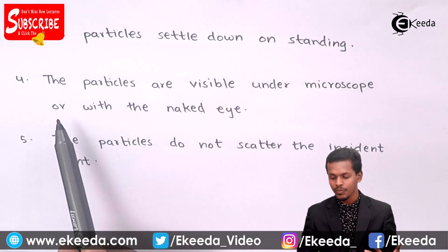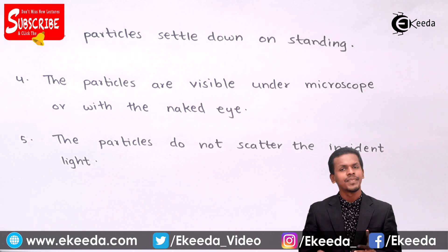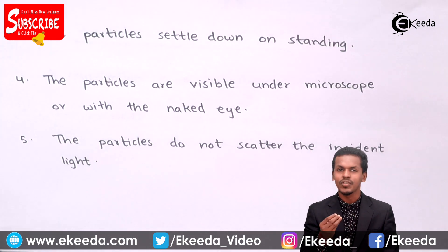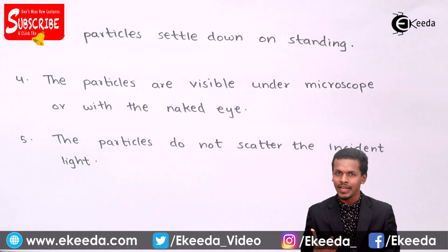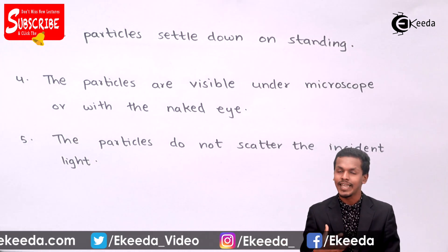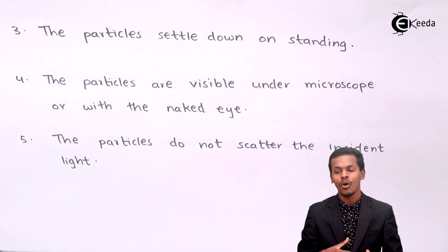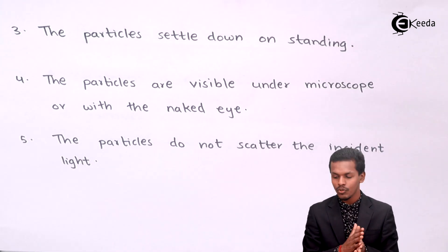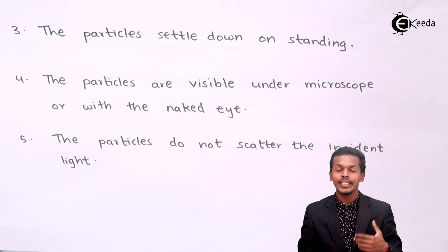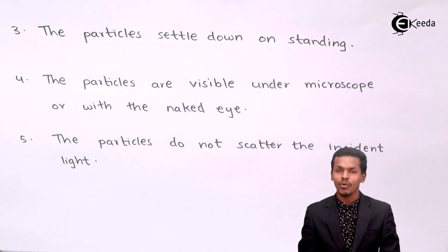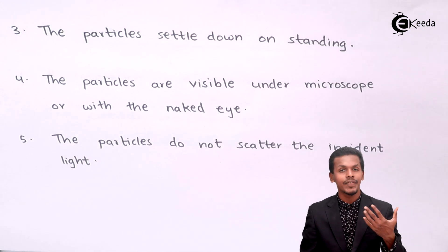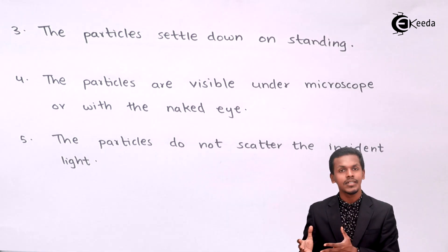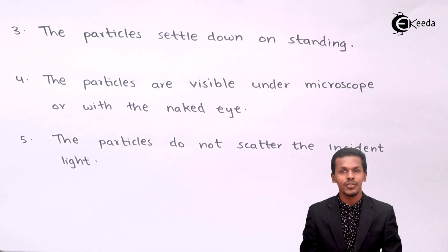The next property is that the particles are visible under a microscope or with the naked eye. Because the particle size is greater than 10³ nanometers, suspension particles can be seen with the naked eye or under a microscope. In contrast, particles in a true solution or colloidal solution cannot be observed so easily.